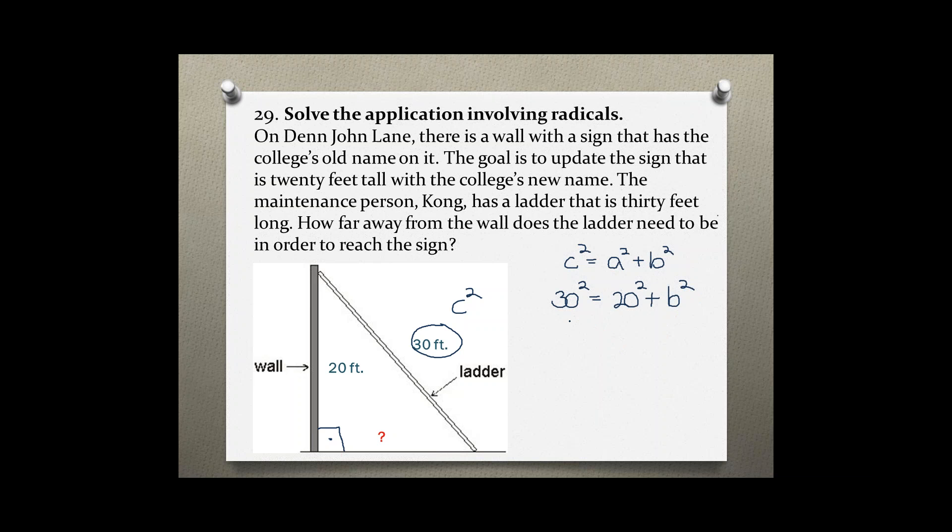Now we're solving for b squared. So 30 times 30 would be 900 and then 20 times 20 is 400 plus b squared. Subtracting 400 from both sides to solve for b. And we get 500 which is equal to b squared.